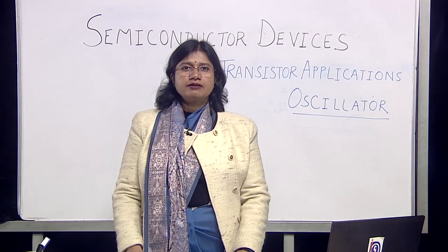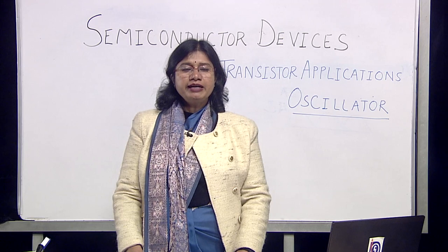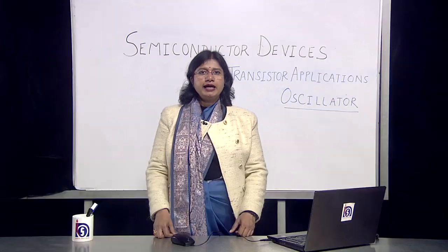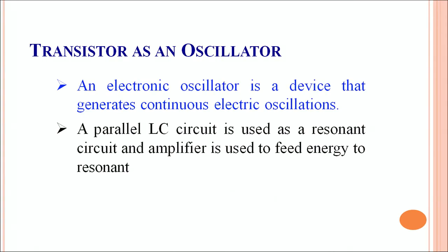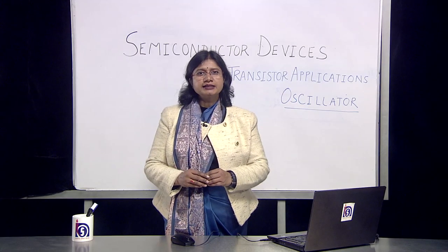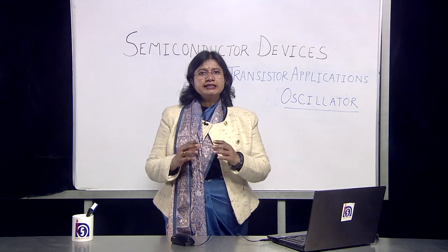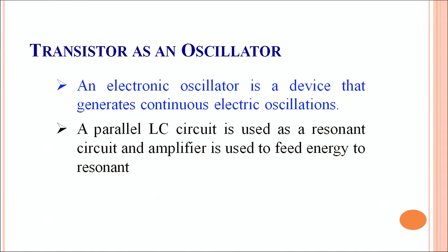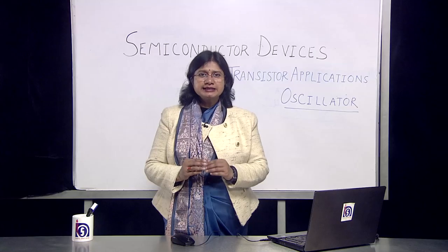The transistor is possibly a very good oscillator. So let's first understand what is an oscillator. An electronic oscillator is typically a device that is capable of generating continuous electric oscillations. A large number of electrical devices make use of transistors as an oscillator. In a simple oscillator, there is a parallel LC circuit — that is an inductor-capacitance circuit — which is used as a resonant circuit, and an amplifier which is used to feed the energy back to the resonant circuit.